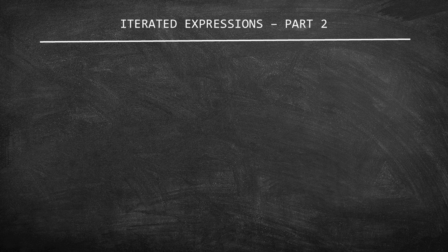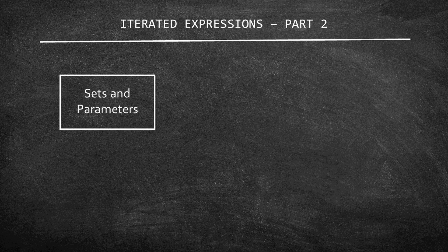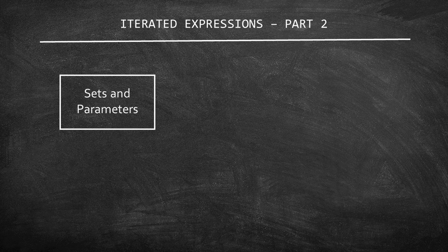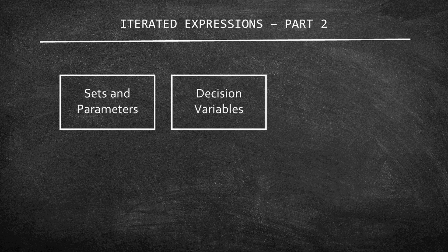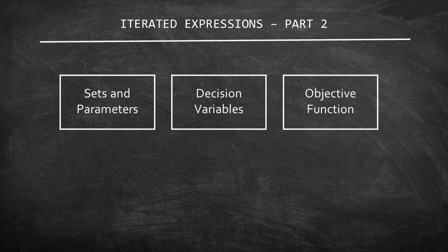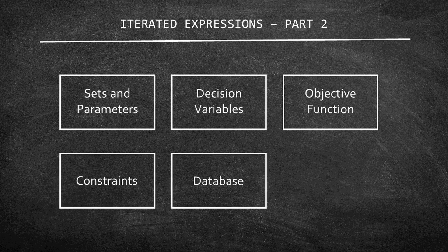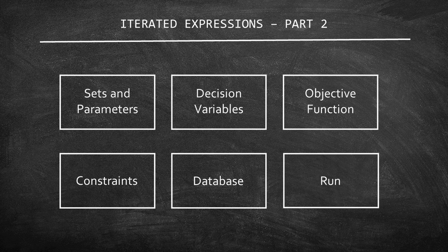As usual, I will start by describing the content of this tutorial. First, you'll learn how to declare sets and parameters. Then, I will show the syntax of decision variables in compact notation. After that, I will teach how to code the objective function and the constraints. You will also learn how to embed a dataset in the code and run the model.